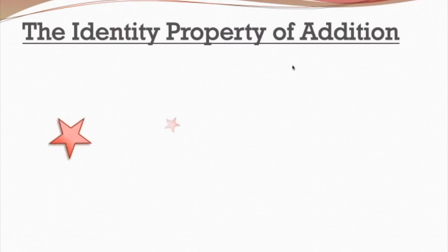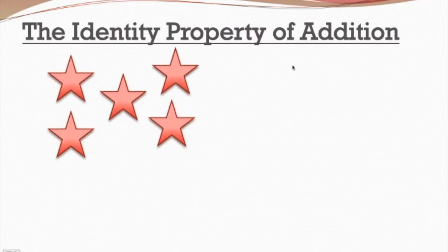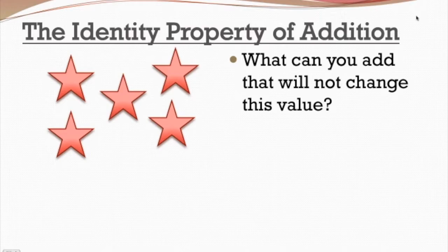So first of all, what exactly is the identity property of addition? Now you might remember that in the title I said the identity properties, which means that there's more than one. And the first one we're talking about is the identity property of addition. Let's say we have these five stars. What can I add to these stars that will not change the original value or the original identity of this number of stars?